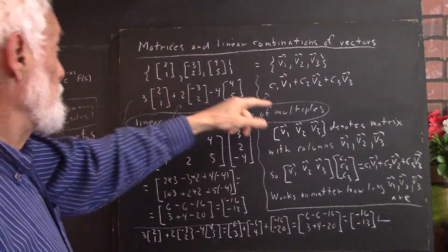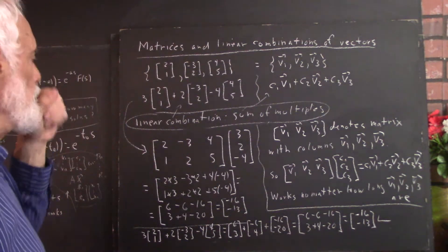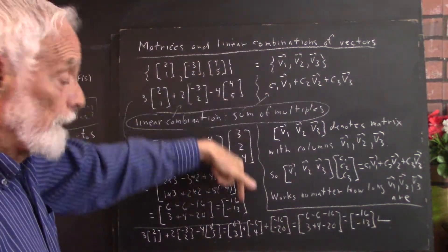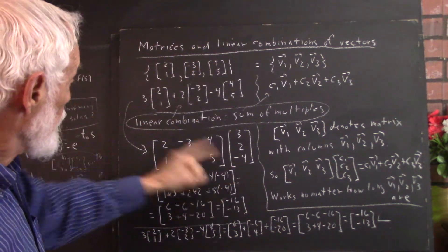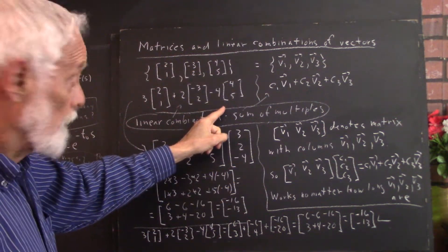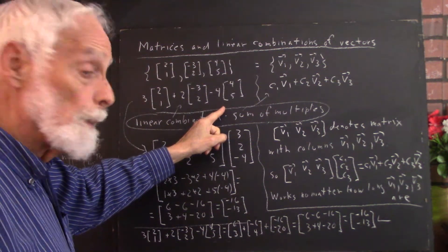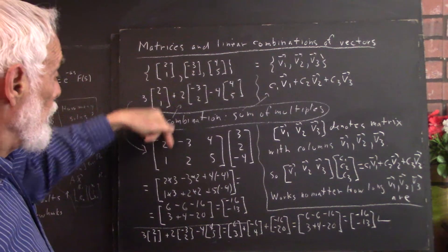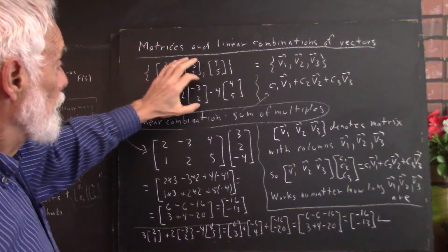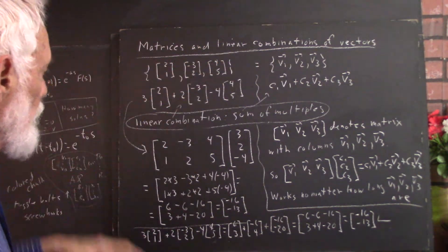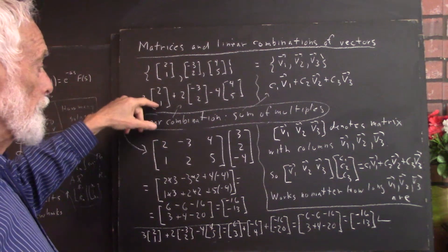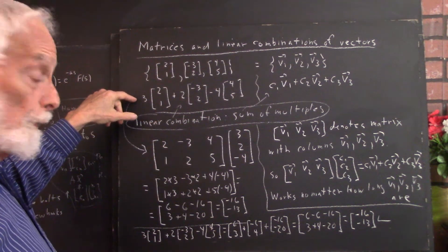That linear combination can be represented by a matrix times a column vector, where the column vector is the three numbers that we chose to form the linear combination, and the columns of the matrix are the three vectors. Thus, the first vector is multiplied by 3. The first vector is 2, 1, it's multiplied by 3.